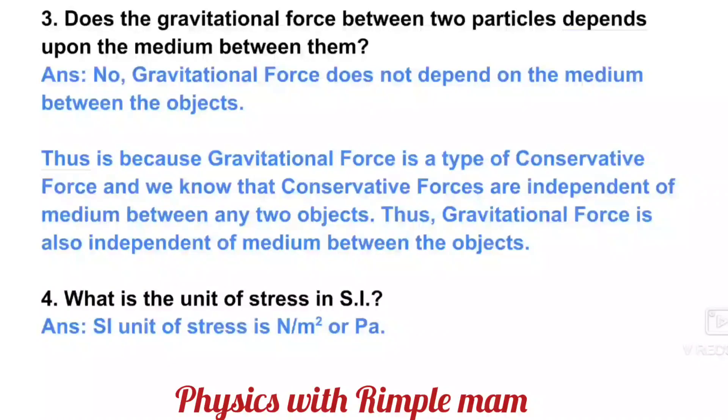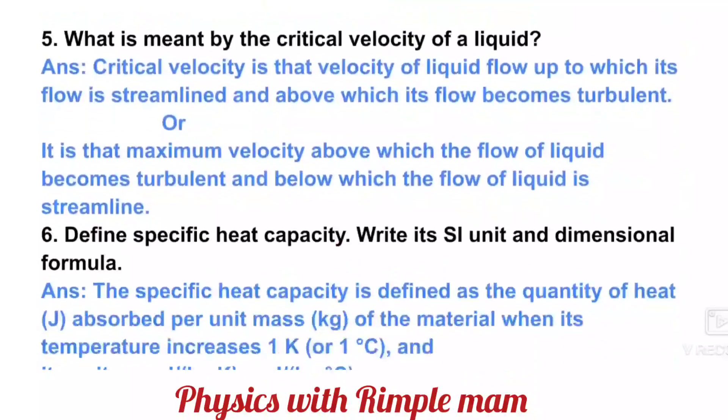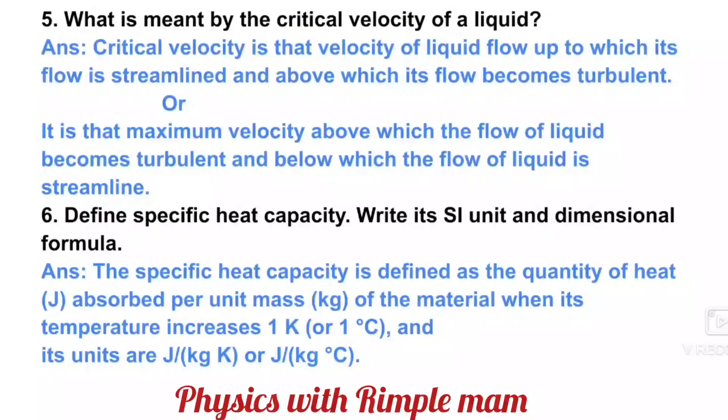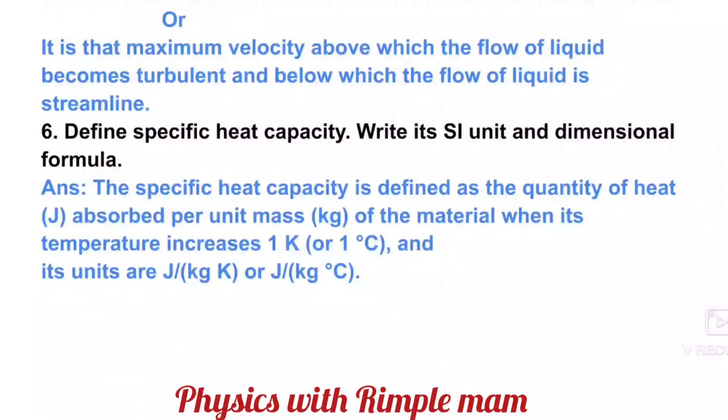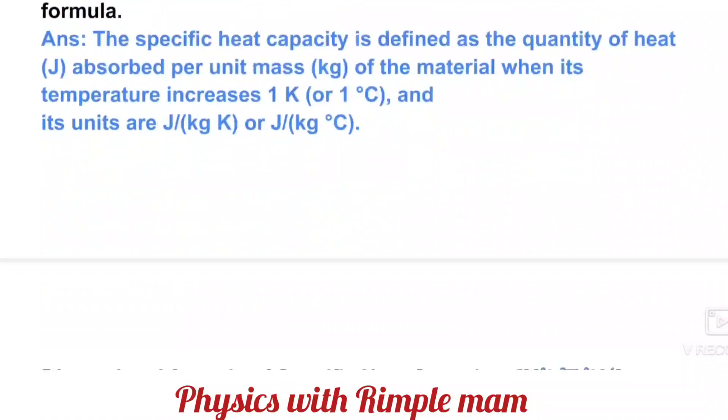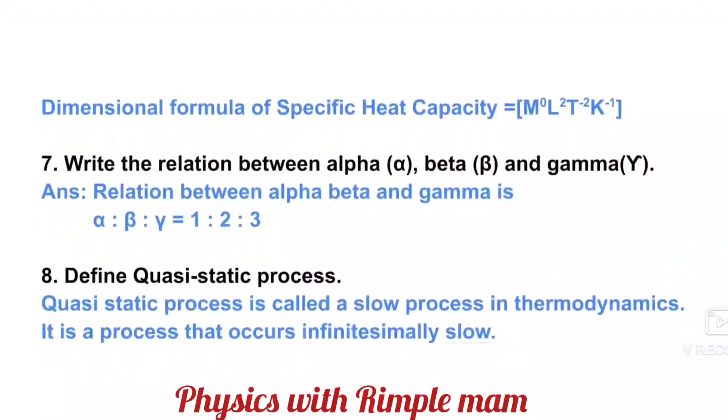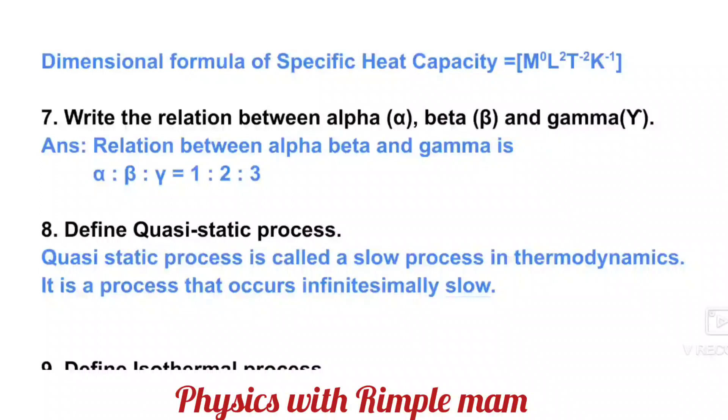Next: What is the SI unit of stress? That is Newton per meter square or Pascal. What do you mean by critical velocity? Critical velocity of a liquid is the maximum velocity above which the flow of liquid becomes turbulent and below which flow of liquid is streamline. Critical velocity is a most important definition, so learn it well. Next: Define specific heat capacity, write its SI unit and dimensional formula.